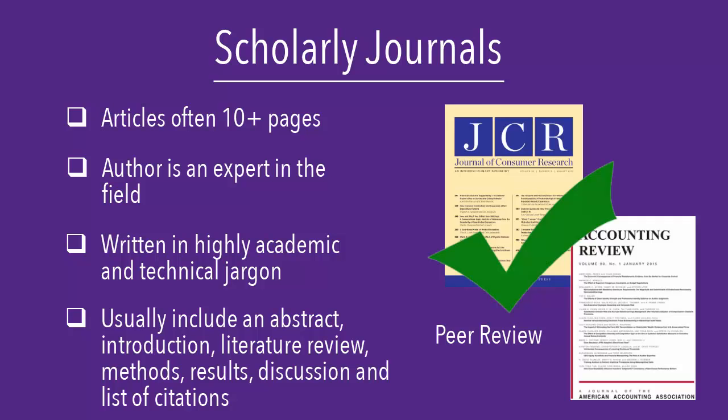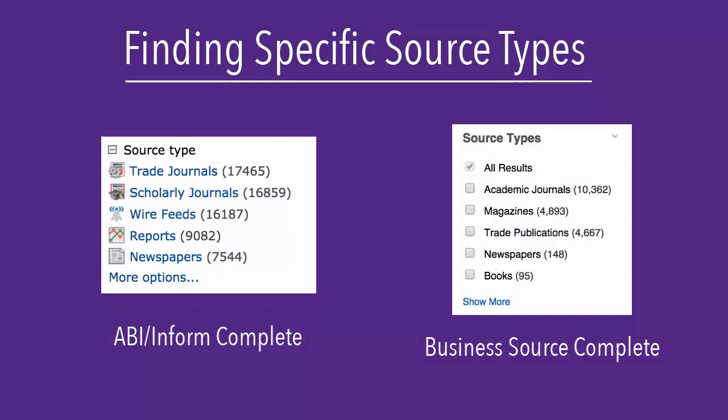Scholarly articles are great sources to use when writing research papers. You can limit to a specific type of article in the library's article databases. Watch the Using ABI Inform Complete and Business Source Complete video to learn more. The type of source you need will depend on the requirements of your assignment. Check with your professor if you're not sure which source types you should be using.